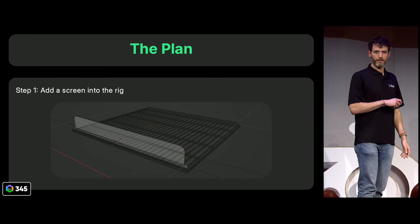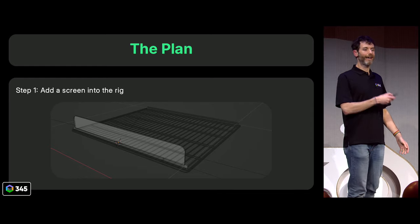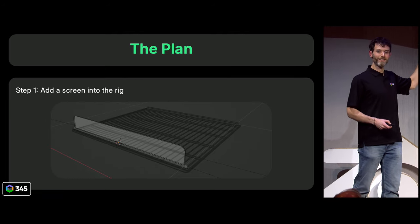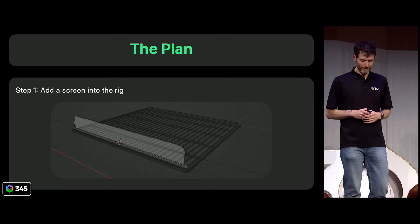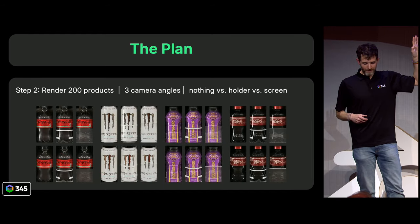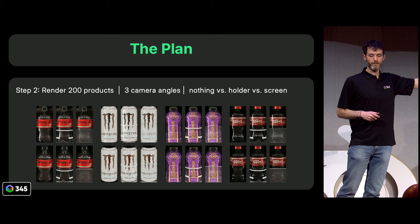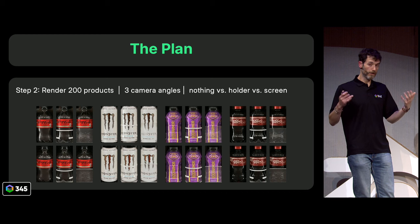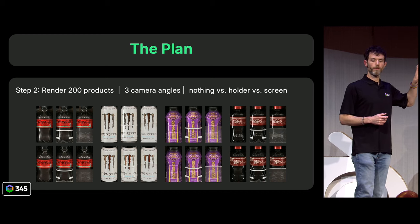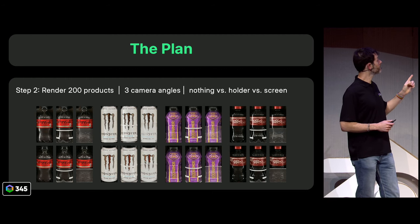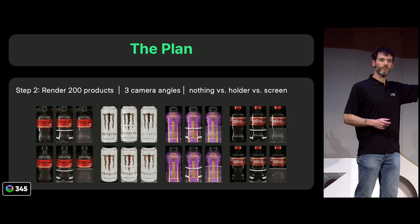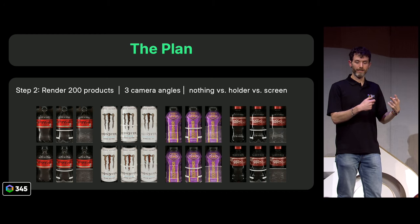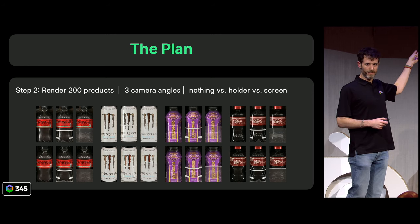So here's the plan for answering my colleague's question. First, I want to add a screen into my synthetic rig — and I am a developer, not a modeler, so go easy on me. This is probably the most complicated thing I've ever modeled, but it'll do the job. Then we render a whole bunch of images of these products from the same camera angles and with otherwise the same environment settings, just changing what's in front of the product. We've got three different categories of obstruction: nothing, the plastic holders — both of which were included in the training data for our machine learning system — and then additionally the screens.